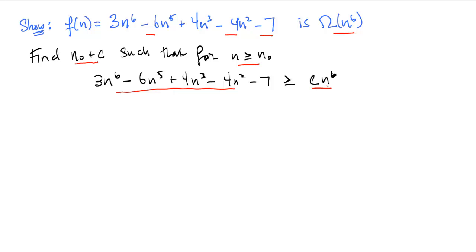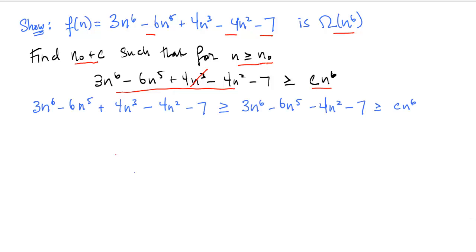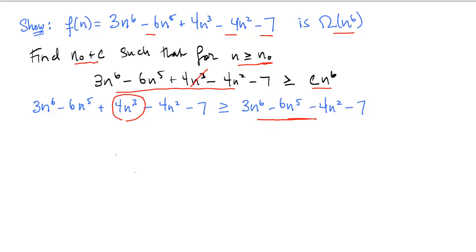To simplify this expression, we start by dropping the lower-order terms with positive coefficients — in this case, only the 4n³ term. Since n₀ is positive, any n we plug in is also positive, so the 4n³ term is positive. The expression without it is therefore less than or equal to the original. If we can lower-bound the reduced expression by c·n⁶, then the original f is also at least c·n⁶.